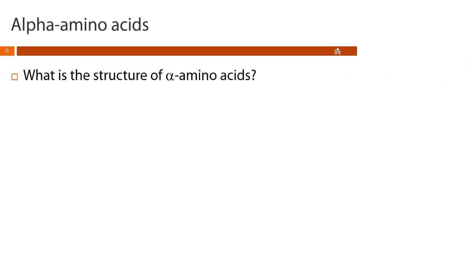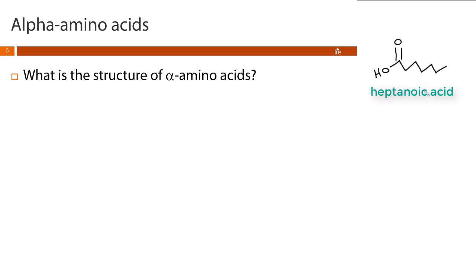So let's talk a little bit more about the chemistry of amino acids. Notice the title of this slide says alpha amino acids. I want you to think back to when we talked about carboxylic acids and we mentioned the alpha carbon. Remember, if we have a carboxylic acid like heptanoic acid, the carbon next to the carbonyl is our alpha carbon. Then the next one is beta, gamma, delta, epsilon, and so on all the way through the Greek alphabet.